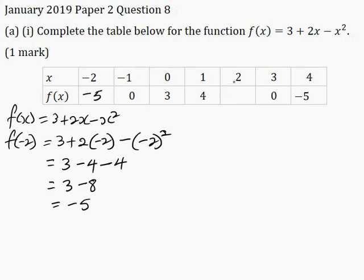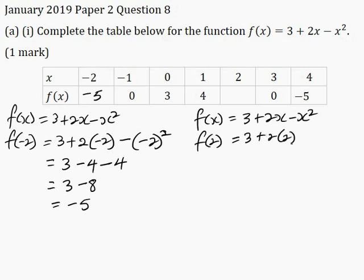Now we want to find f(2). The function f(x) = 3 + 2x − x². Substituting x = 2, this becomes 3 + 2 × 2 − 2². So this is equal to 3 + 4 − 4. 4 minus 4 is 0, so 3 plus 0 is 3. So I'll write here 3.